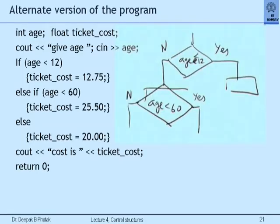Here is a question: could I have exchanged these two conditions in the first two parts of the ladder? Could I have said 'if age less than 60, ticket cost is 25.50, else if age less than 60'? No. Try to exchange these conditions and execute the algorithm with two or three sample values. Typical sample values are age 5 years, age 24 years, age 63 years — these are the three partitions in which the logic is divided. You can implement the logic in a multiplicity of ways.